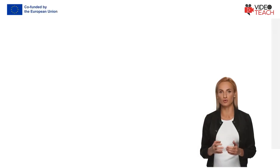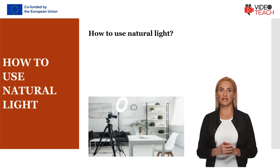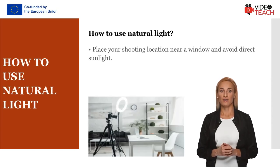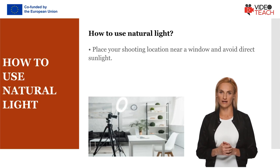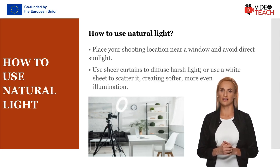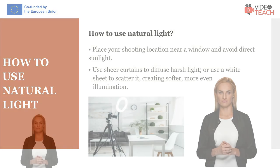In order to use natural light, you should place your shooting location near a window and avoid direct sunlight. If the sunlight is too harsh, you can use sheer curtains to diffuse it, or use a white sheet to scatter it, creating softer illumination.